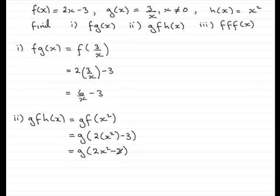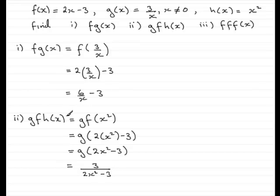So I now need to replace any x in g of x with 2x squared minus 3. So what we have is 3 divided by 2x squared minus 3. And that's gfh of x.